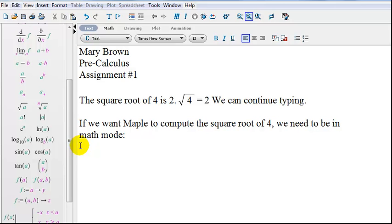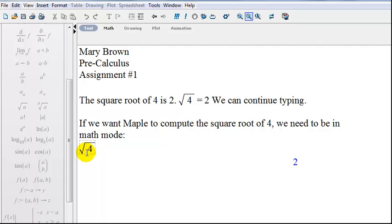Notice that I'm not in math mode. My cursor is a vertical bar. I'm also in text mode. To be in math mode, click on math and let's put our square root symbol in there. Now I'm going to hit enter and Maple computed the answer, which is 2.